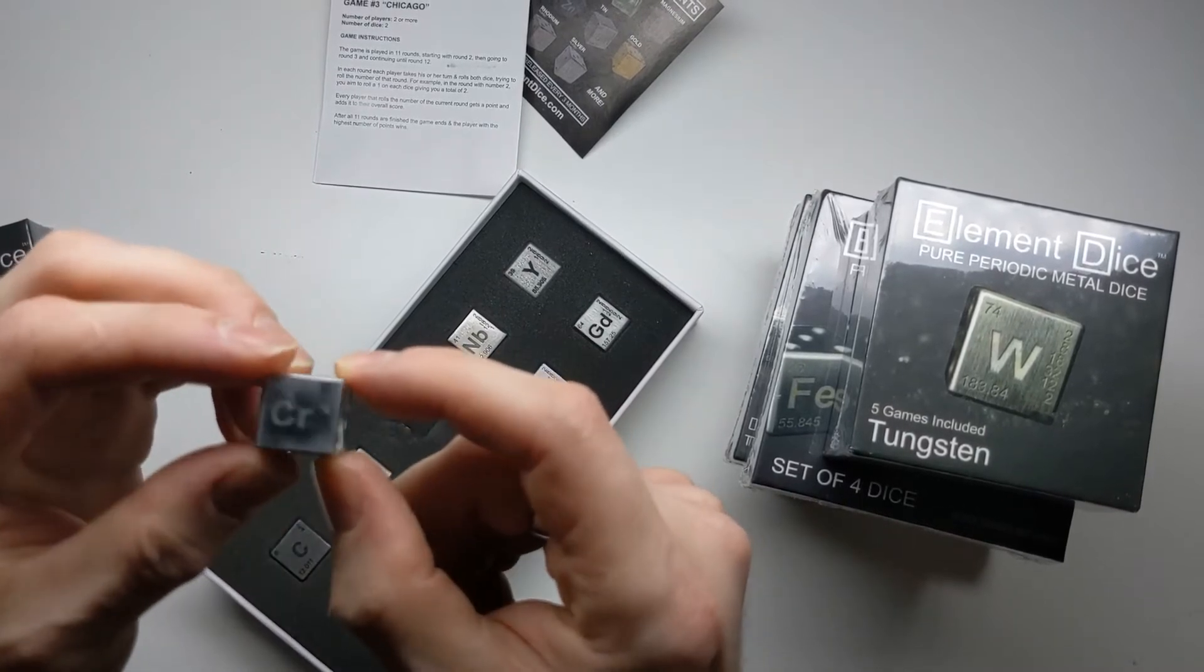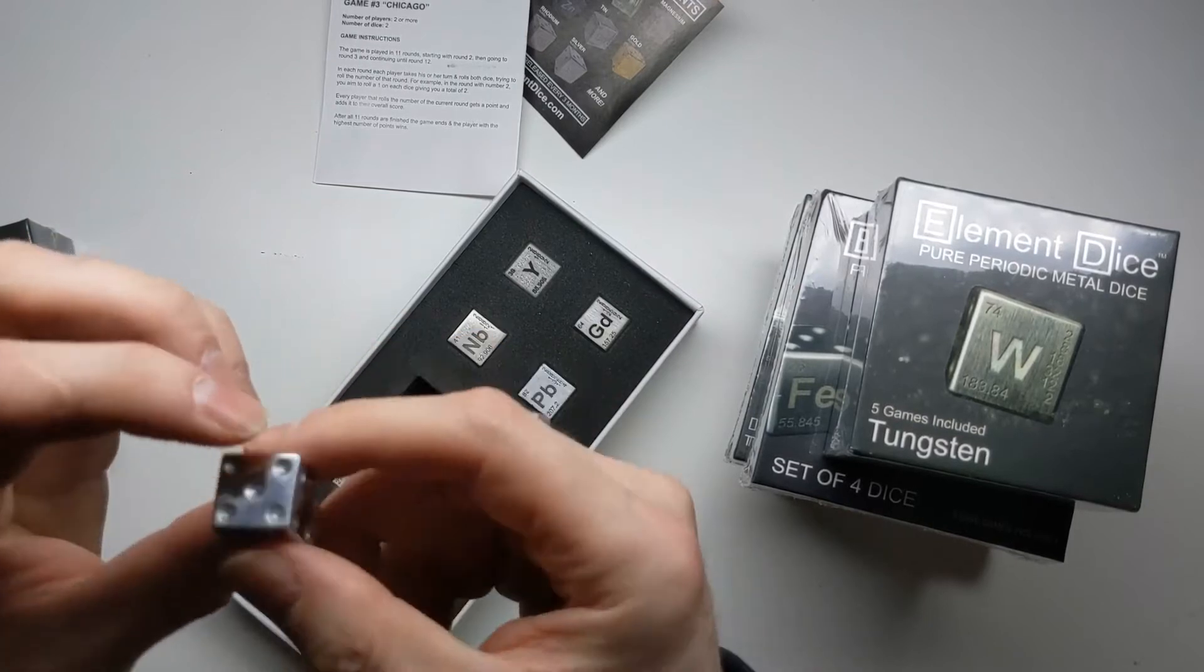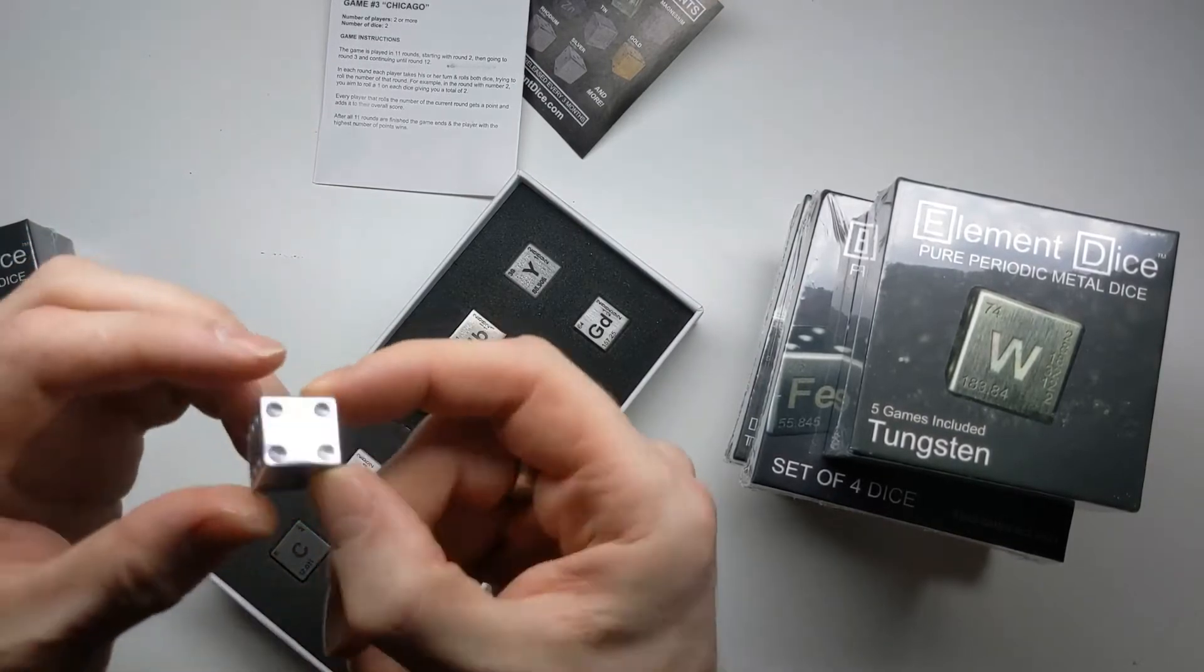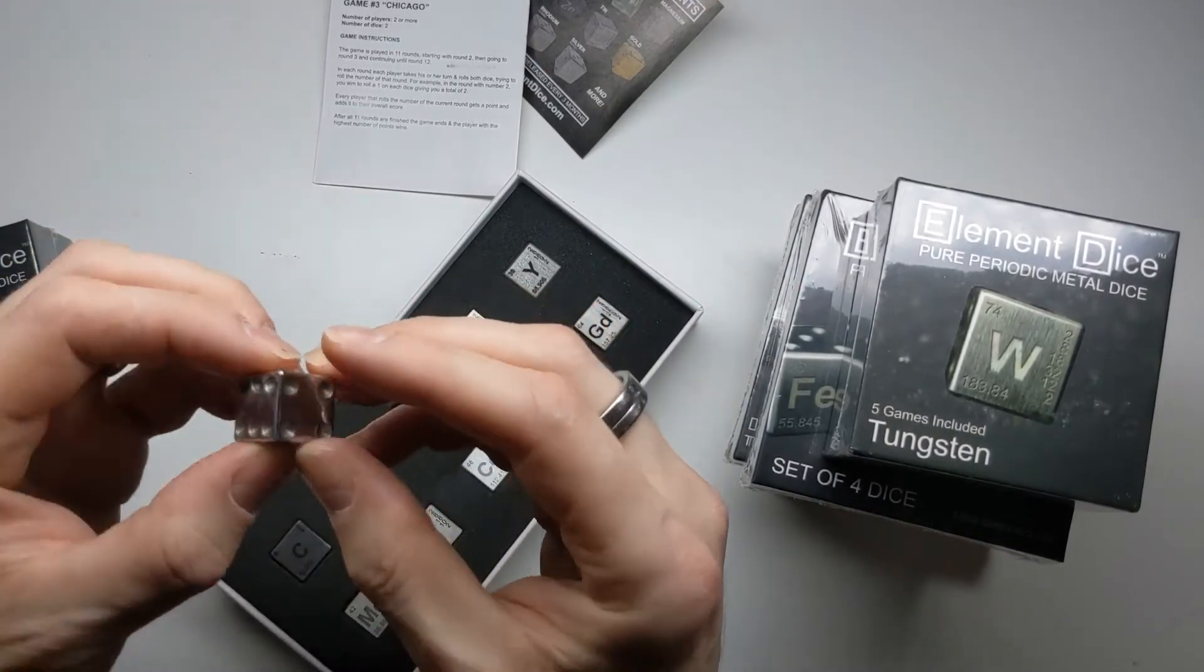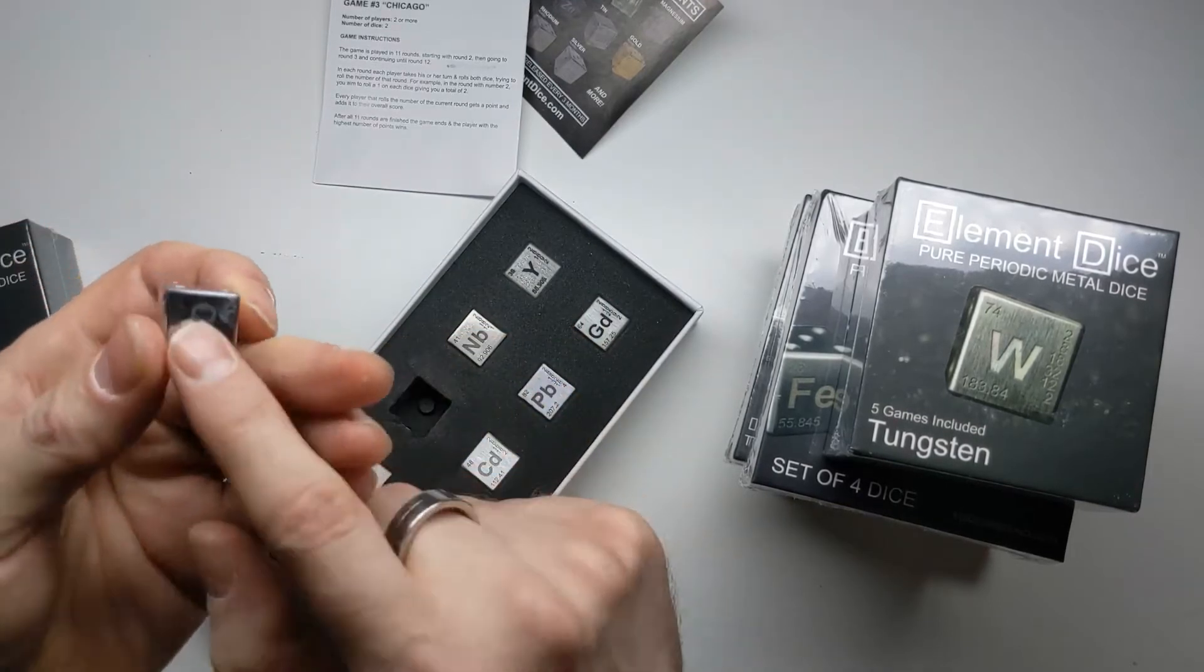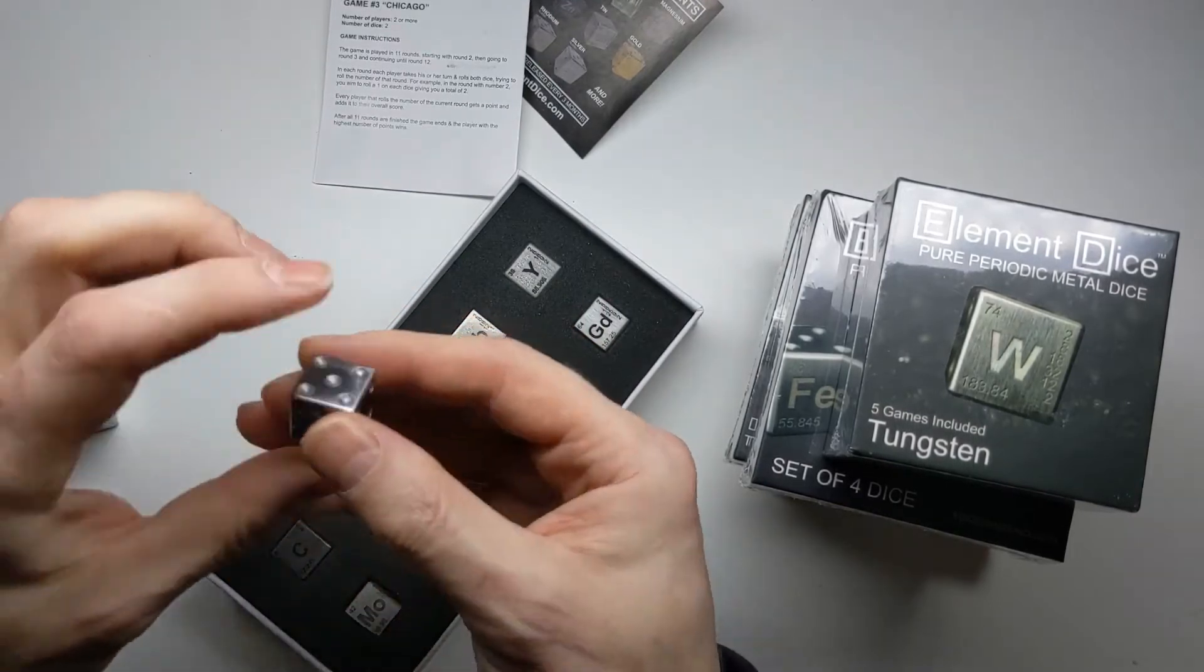So the number one side is the one that has the element details on it, chromium in this case. And then the other sides are all indented with normal dice dots to make numbers. They're laid out the right way, right? Yeah, so four opposite three, six opposite one, and two opposite five, so they add up to seven.